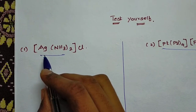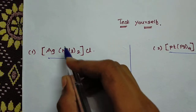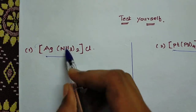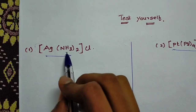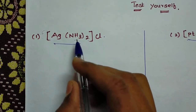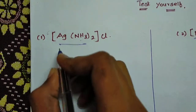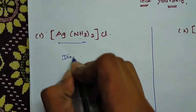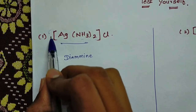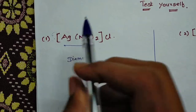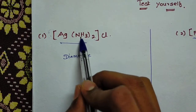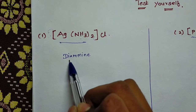So in this coordination compound name we need to start from the ligand. The ligand name is amine, so with two ligands it becomes diamine.